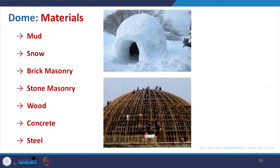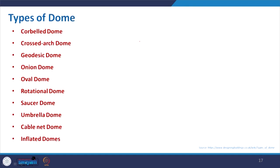Coming to materials: as already mentioned, domes can be made of mud, snow, brick masonry, stone masonry, wood, concrete, or steel. Here you can see a temporary dome being created with bamboo — beautifully made. And this is an igloo being formed with compressed ice blocks — the dome is created from those.